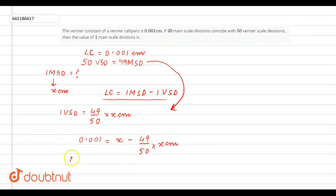What will we get here? x divided by 50. So what is the value of x, the main scale division? 0.001 times 50. So the value is 0.05 centimeters.